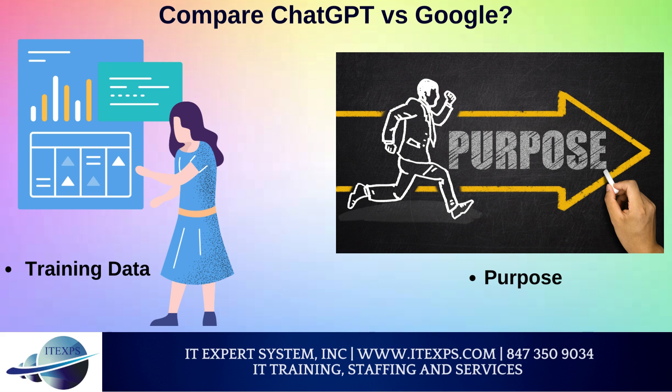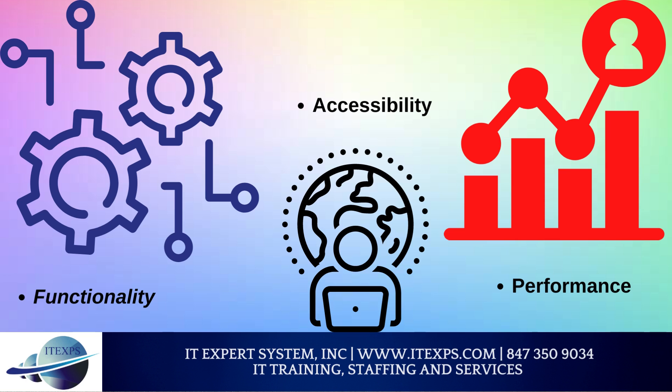Purpose: ChatGPT is designed to generate human-like responses to text inputs, while Google's language model is designed to provide answers to a wide range of questions and provide information on various topics. Functionality: ChatGPT is used primarily for conversational AI and language generation tasks, while Google can be used for a wide range of applications, including search, information retrieval, and knowledge management.